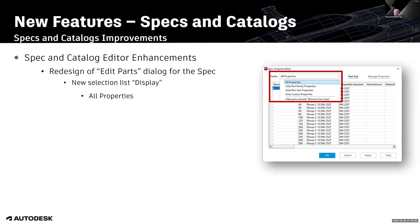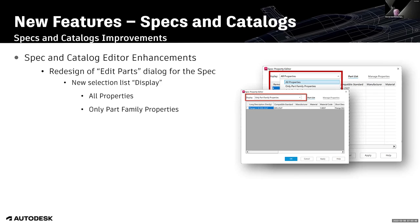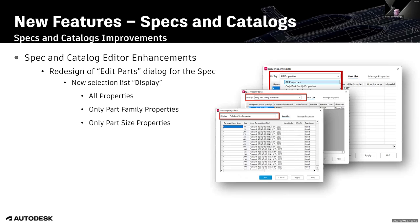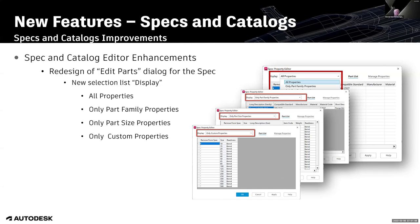The first filter shows all properties. When selecting only part family properties, only general size-independent properties are listed, and only one row will be shown. Selecting only part size properties shows a separate row for each size of a component. The last possibility is to select only custom properties, showing any additionally added properties.